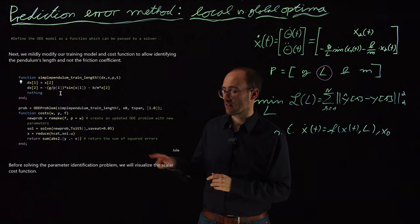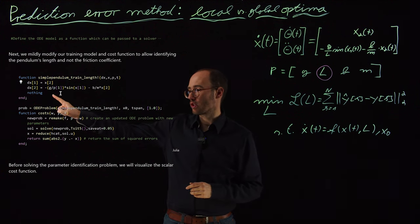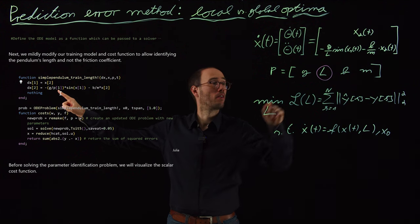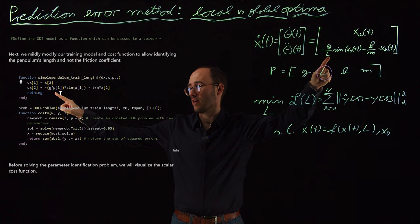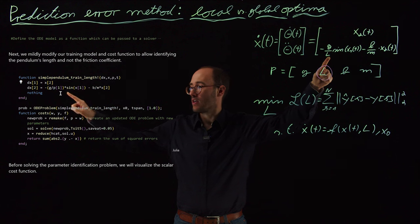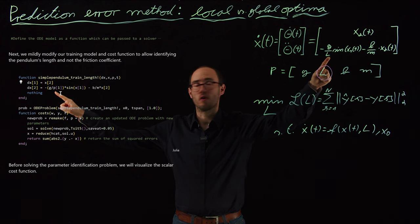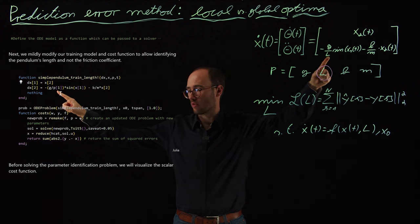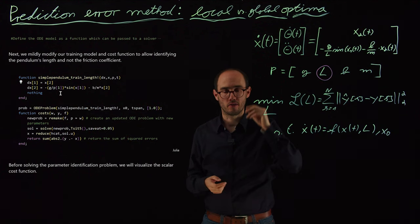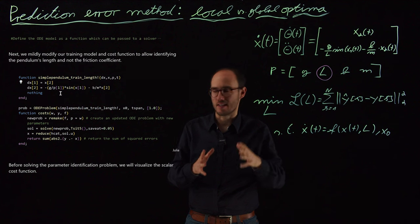The only difference is now that the parameter which we're going to optimize is p1, which is basically this l here. Previously, we wanted to go for b, but b is now considered to be known, and we just go for p1, which is equal to l. The rest, in terms of the cost function, the combination of the ODE with an ODE solver is identical.